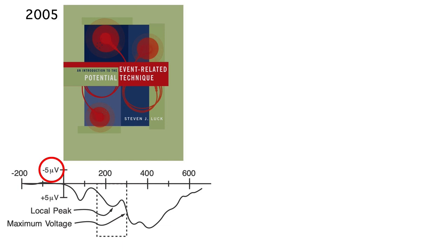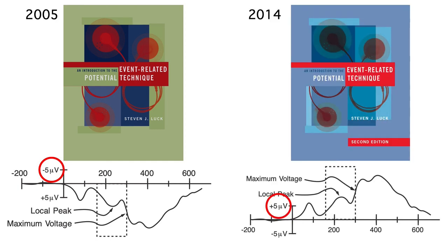But this tradition persisted long after computers made it trivial to plot the data with positive upward, like the other 99% of scientists did. I eventually saw the light, so in the second edition of my book all the figures were plotted with positive upward. The bottom line is that plotting negative up is an outdated convention, but it's still pretty common, so you need to make sure you look at the polarity indicators in the plots of ERP waveforms.